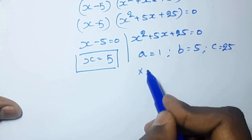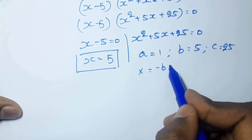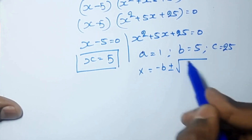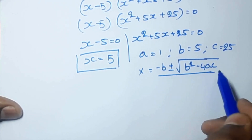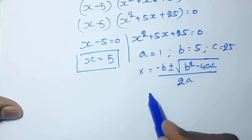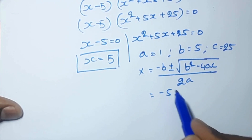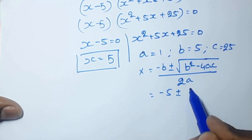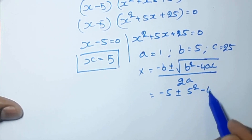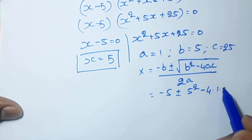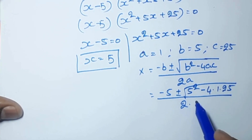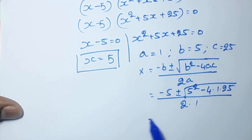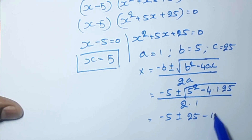We are going to apply this formula: x equal to minus b plus or minus square root of b square minus 4ac, by 2a. Applying here: minus 5 plus or minus square root of minus 5 square minus 4 times 1 times 25, by 2 into 1. That gives us minus 5 plus or minus square root of 25 minus 100, by 2.